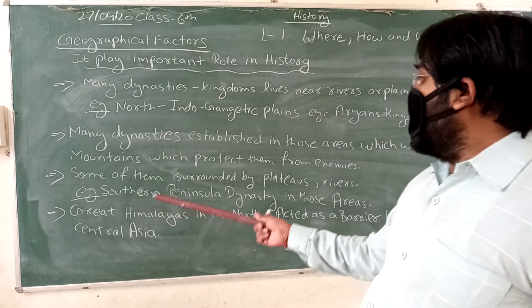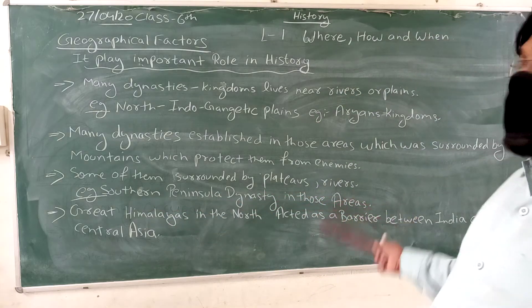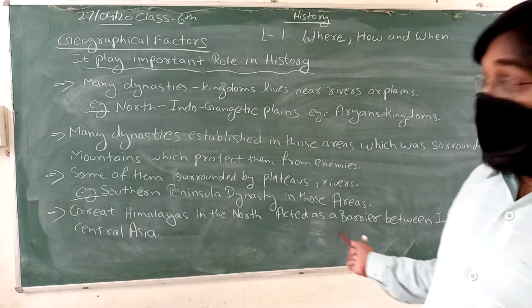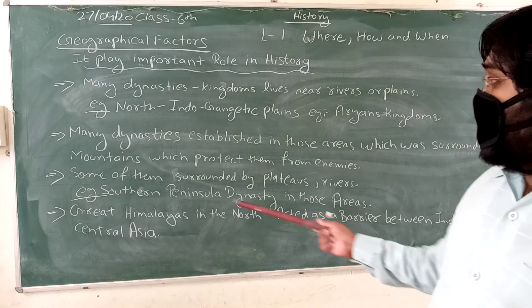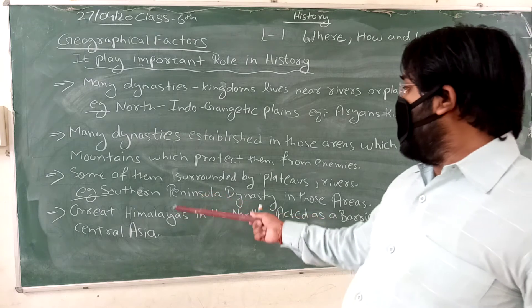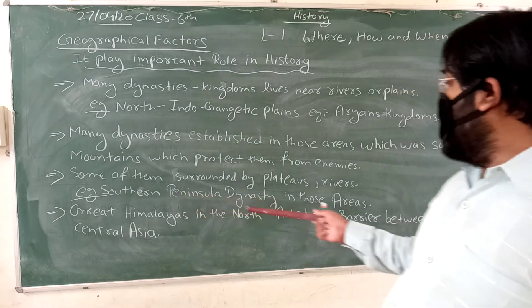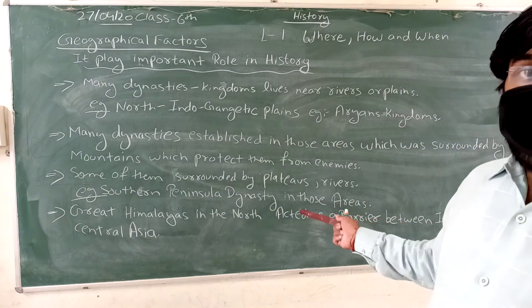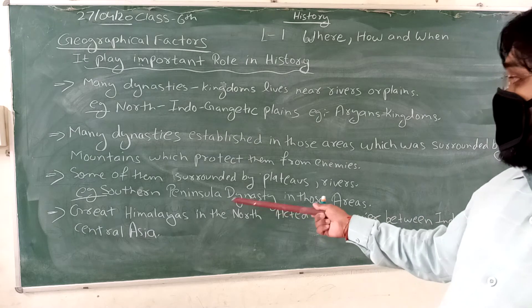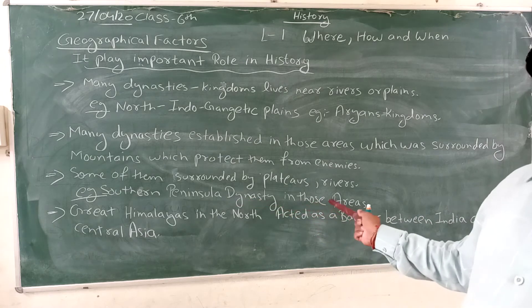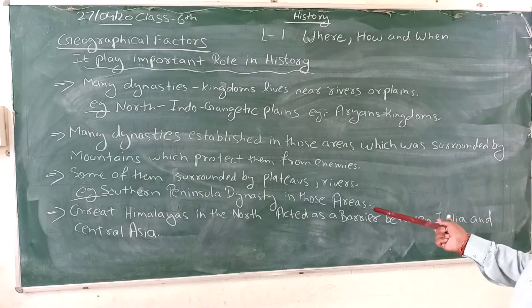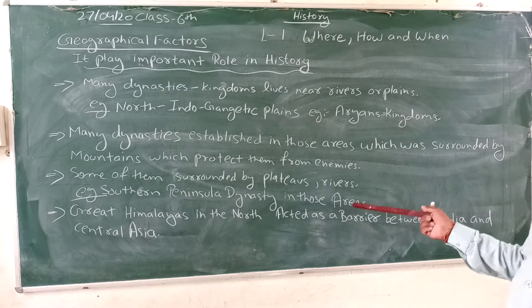Third, some of these dynasties were surrounded by plateaus and rivers. Some were near plateaus or rivers. Example: southern peninsula dynasties in those areas — the Deccan plateau. Peninsula dynasties were established there.